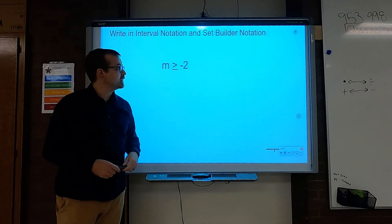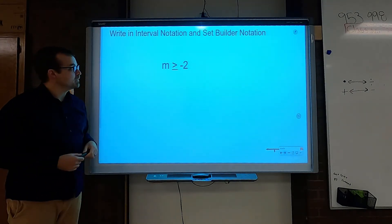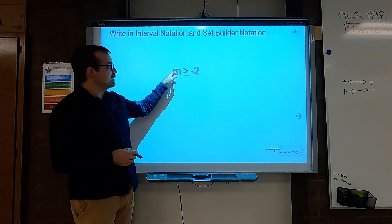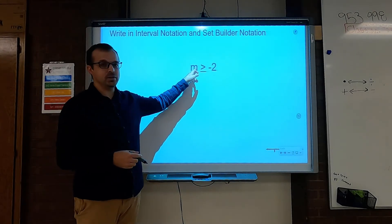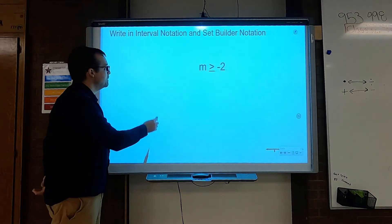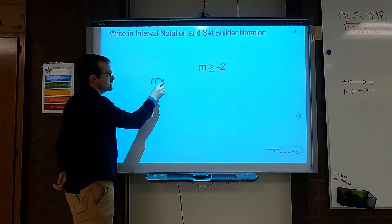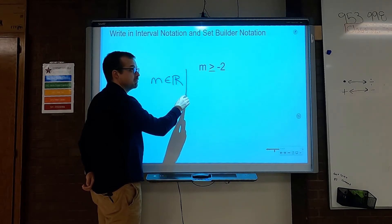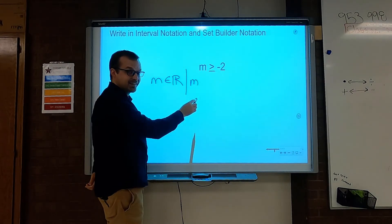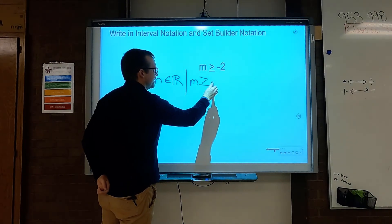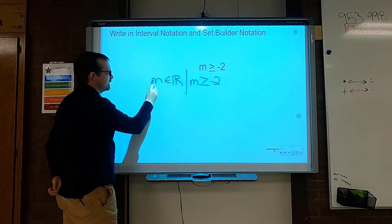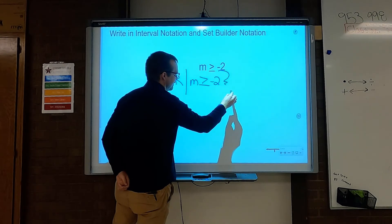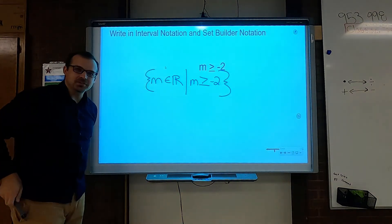Here's another one — we need to do interval notation and set builder notation. See if you can do this one by yourself. It's already got the interval notation — that makes set builder notation really easy. We're using the variable m. So m is an element in the real numbers such that m is greater than or equal to negative 2. There's your set builder notation.